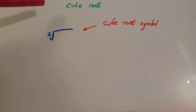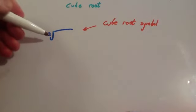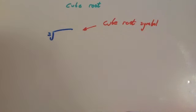In this video, we're going to look at cube roots and how to find the cube root of a number. This is the cube root symbol. It's a bit like a square root symbol, but it's got a little superscript 3 in front of it.